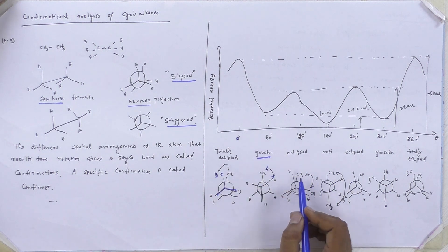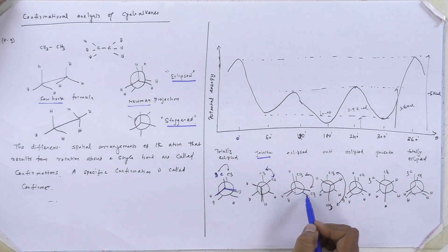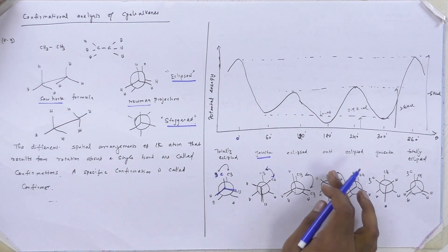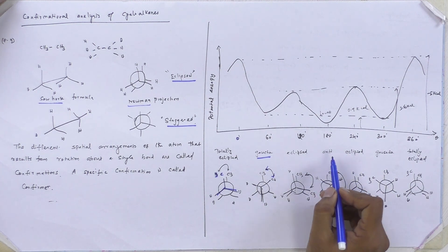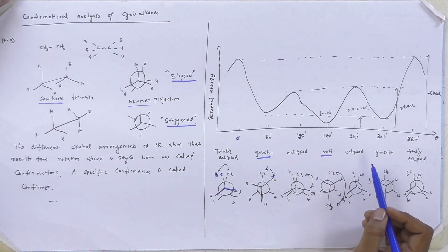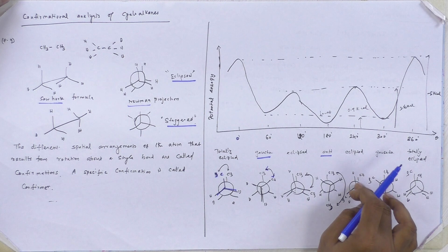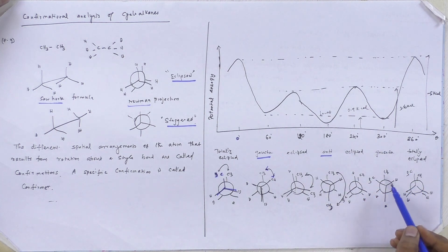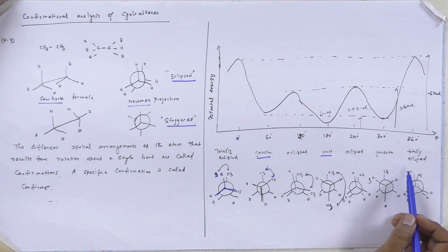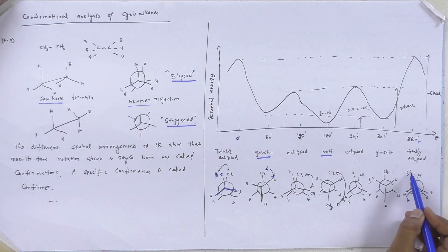Next we rotate another 60 degrees, which gives the eclipsed form again. Similarly, rotating another 60 degrees places the methyl groups in exactly the opposite direction — this position is called anti, ANTI. Again we rotate 60 degrees, giving an eclipsed form. Rotating another 60 degrees to 300 degrees gives the gauche form, and finally rotating 60 degrees to 360 degrees gives the totally eclipsed form.